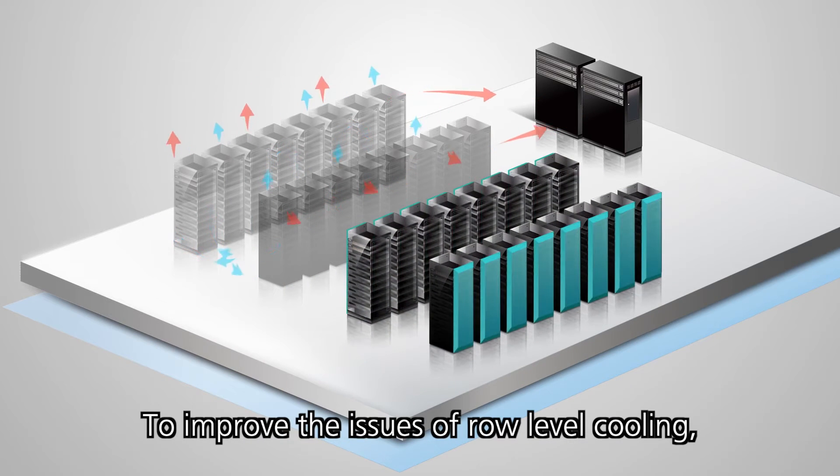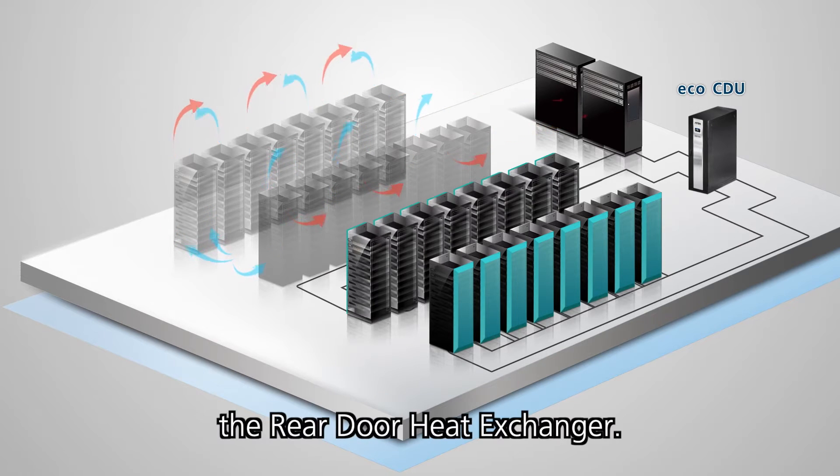To improve the issues of row-level cooling, a rack-level solution was created, the rear-door heat exchanger. The RD-HX features easy installation, a space-saving design, and air cooling from inside the rack, closer to the heat source.